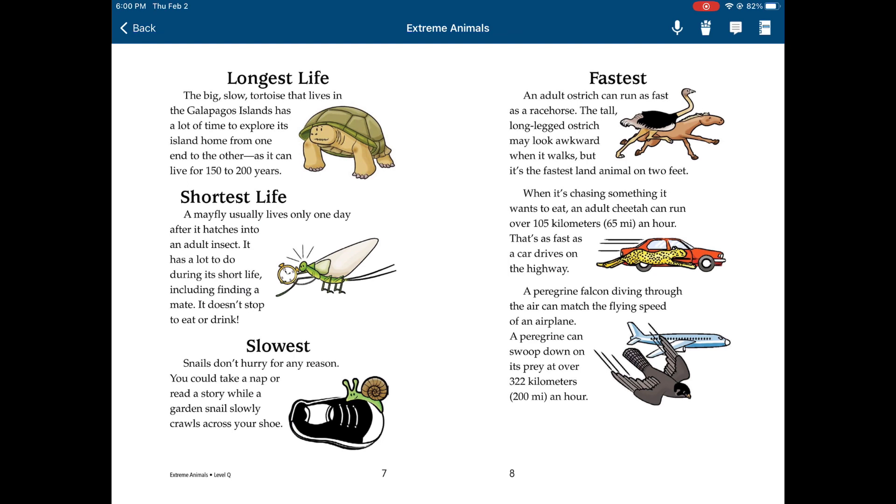Fastest. An adult ostrich can run as fast as a racehorse. The tall, long-legged ostrich may look awkward when it walks, but it's the fastest land animal on two feet. When it's chasing something it wants to eat, an adult cheetah can run over 105 kilometers an hour. That's as fast as a car driving on the highway. A peregrine falcon diving through the air can match the flying speed of an airplane. A peregrine can swoop down on its prey at over 202 kilometers an hour.